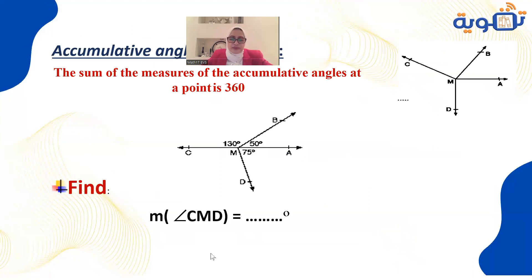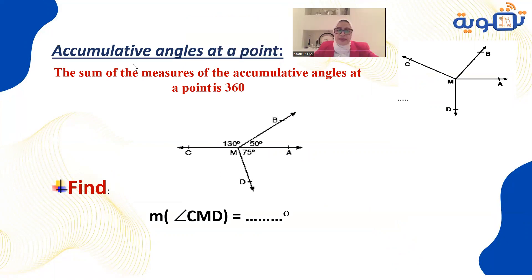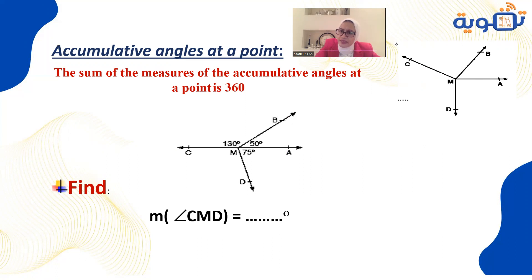Accumulative angles: these are angles having the same starting point, all meeting at one point. Angles AMD, BMC, CMD, and DMA all have vertex M. If you draw a circle around it, the sum of all these angles equals 360 degrees, the same as a full circle.